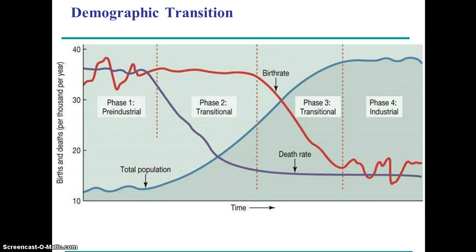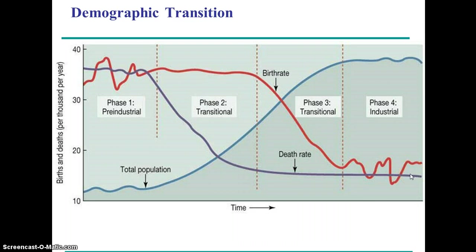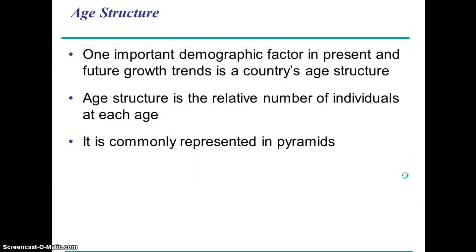Many industrialized countries have reached this point, and some have even gotten to where birth rates are lower than death rates — like Japan, Italy, and some other European countries — so their populations are actually shrinking somewhat.